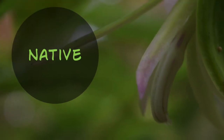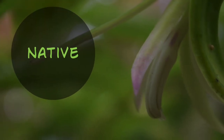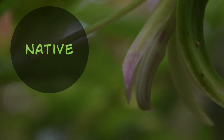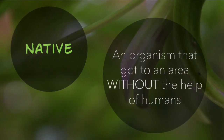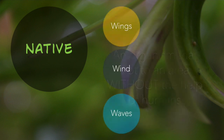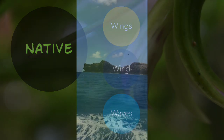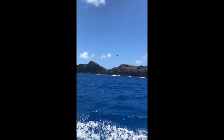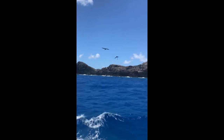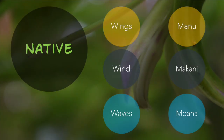A native species is an organism that arrived to an area without the help of humans. Here in Hawaii, these organisms were carried here by one or more of the three Ws: wings, wind, or waves. Or in ʻōlelo Hawaiʻi, nā mea ekolu — manu, makani, or moana.